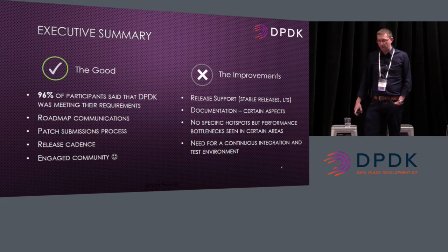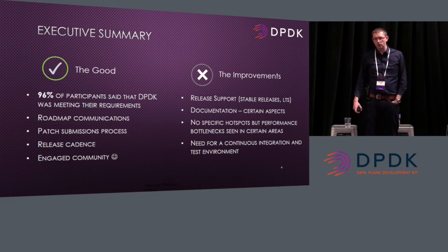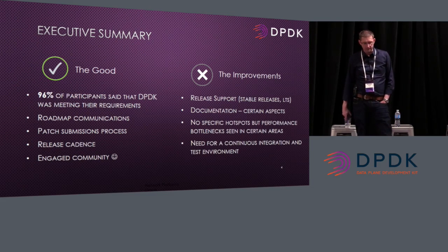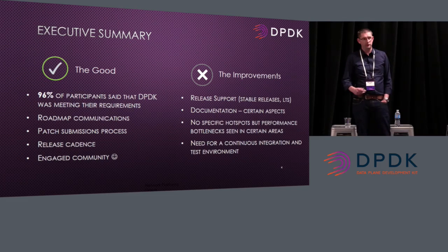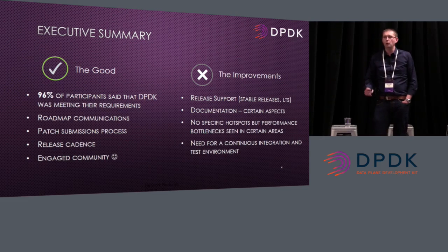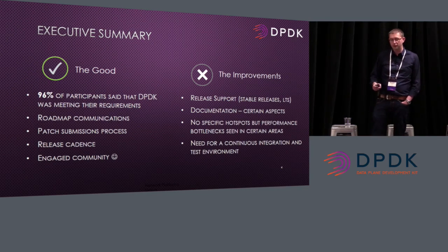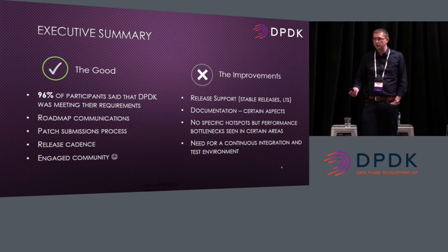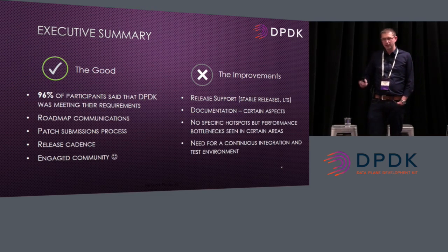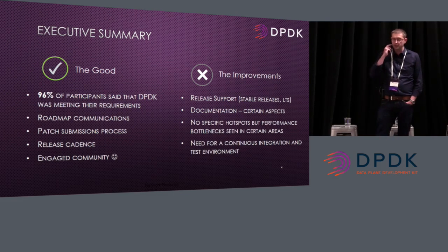The next item was performance bottlenecks seen in certain areas. One of the questions was: have you observed performance bottlenecks in DPDK? About 30% of respondents said they had, and we asked them to identify where specifically. On the positive side, there wasn't any one dominant area — it was very disparate across different performance bottleneck areas. We've tried to group them logically, and when I send out the full results, you'll see the details.